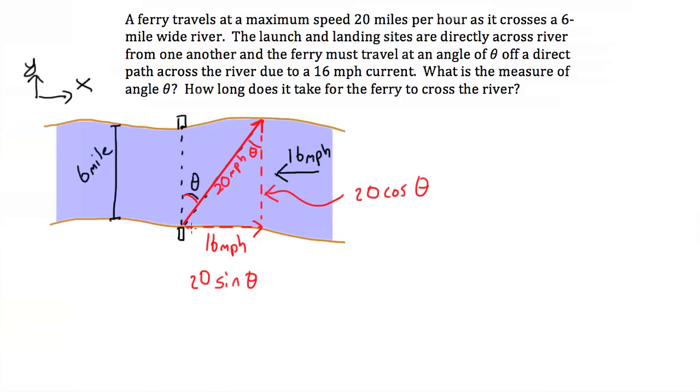Now realize this x component has to be equal to 16, because if it's less than 16, the current will push us somewhere over here, and if it's greater than 16, we'll end up somewhere over here. And we want to be directly across.